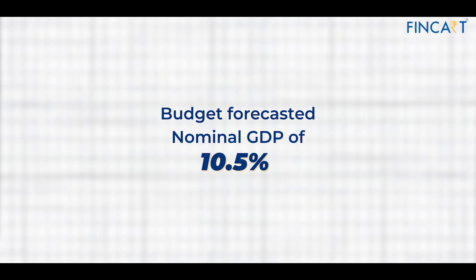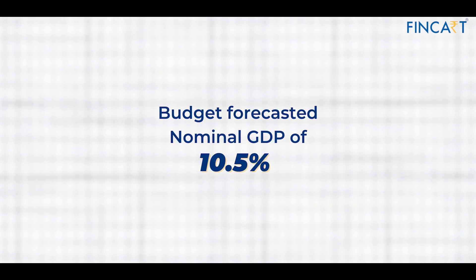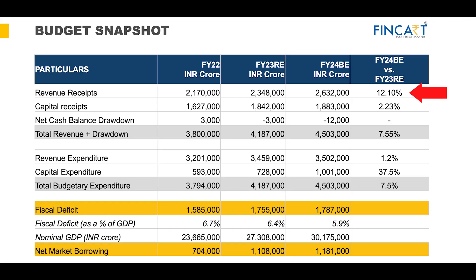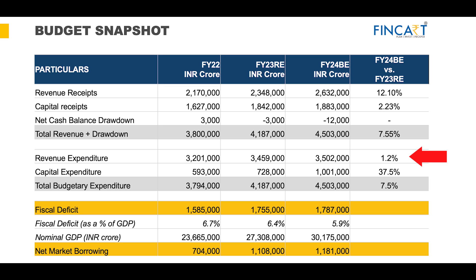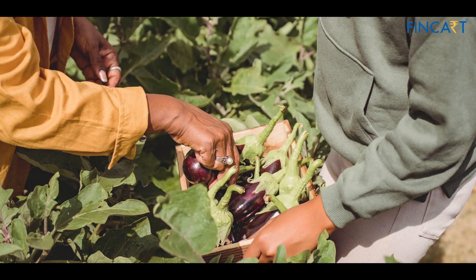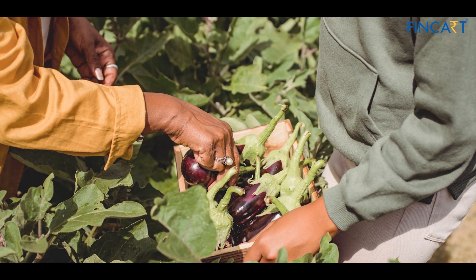India had two things to balance: fiscal deficit and ensuring the India growth story is not impacted. The budget forecasted a nominal GDP growth rate of about 10.5%, which looks quite credible given India's current growth. The revenue receipt is expected to grow by 12%, which also looks very fair. Notably, revenue expenditure is growing by only 1.2%, reduced mainly by cutting subsidies in food and fertilizers.